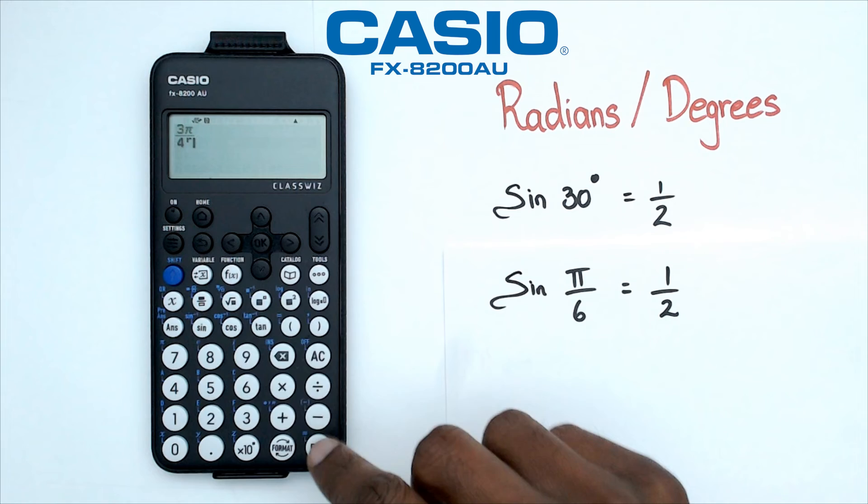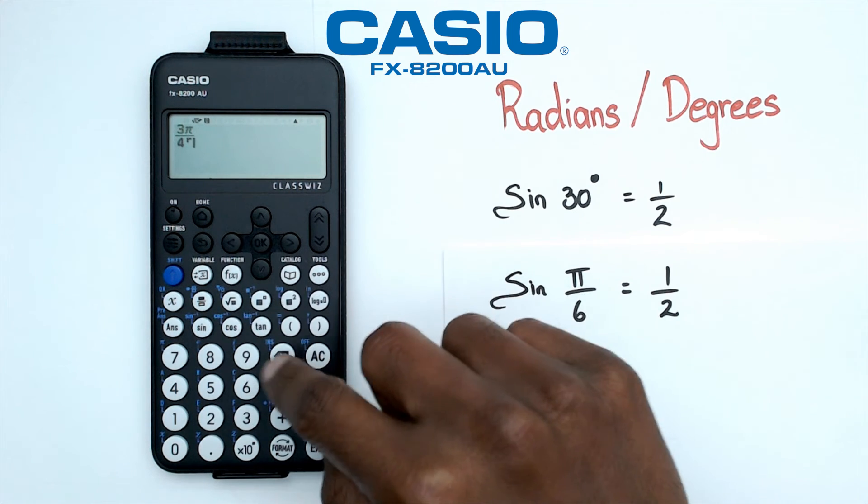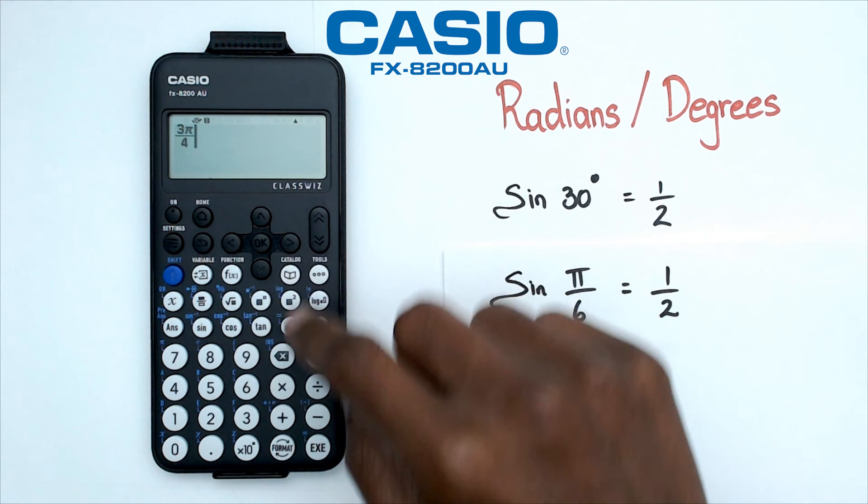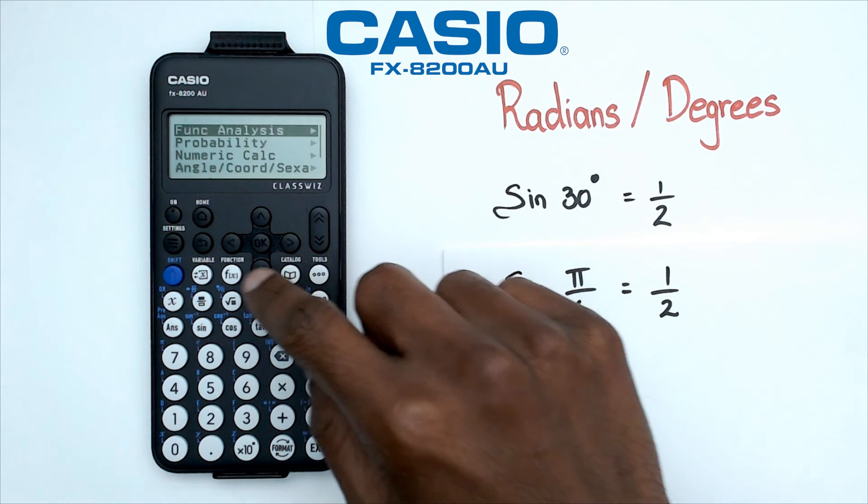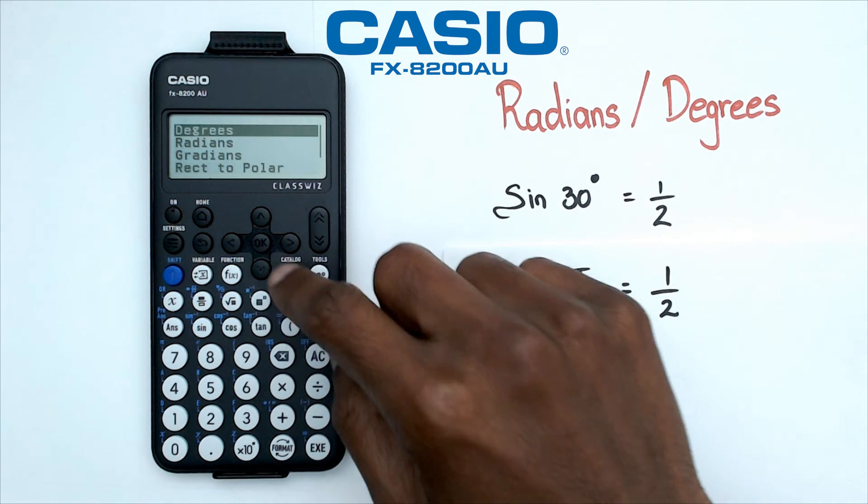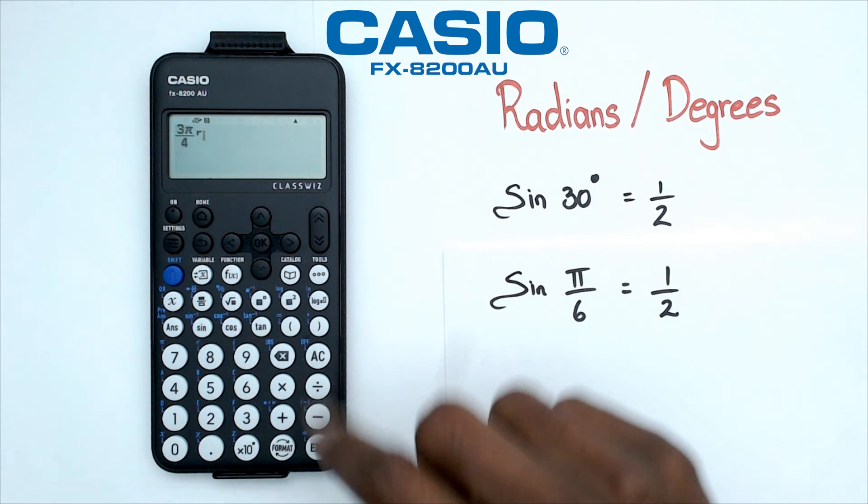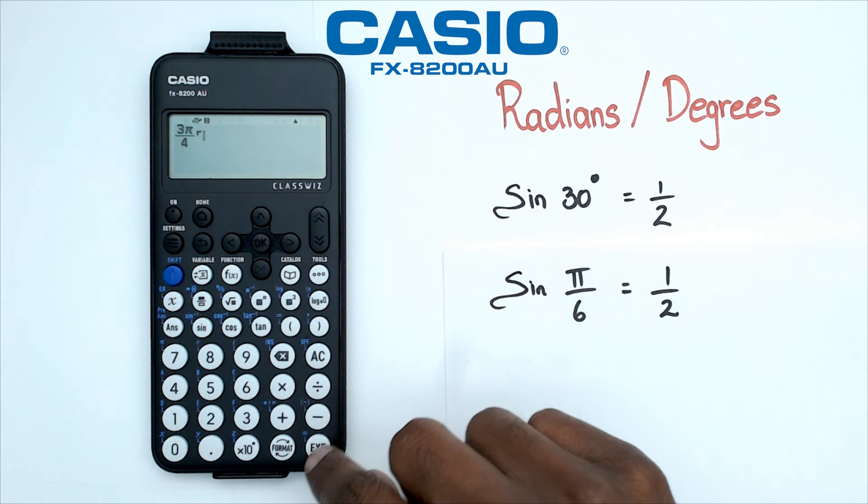And notice, oh I actually realized I shouldn't have put it there, I should have put it here. So I'm going to move the cursor first, go into catalog, angle, and I'm going to put in radians. Now what that should do is if I press equals, it should convert it to 135 degrees.